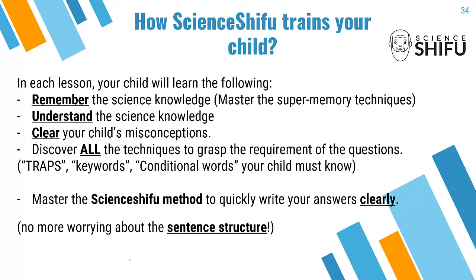How does Science Shifu train your child? Science Shifu trains your child in four main areas every lesson. First, I go through the science knowledge so your child remembers it — for example, what materials are good conductors of heat, how they work, and I'll share super memory techniques to quickly recall this knowledge. By remembering is not enough — you also need to understand how it works. I'll give simple examples, and I'll clear your misconceptions, which is very important.